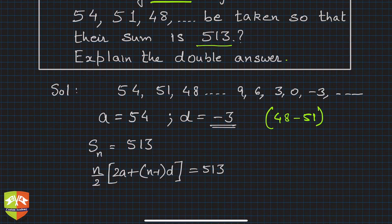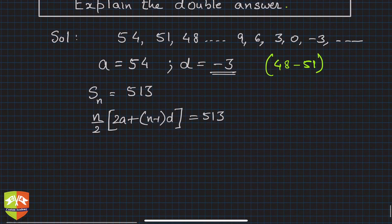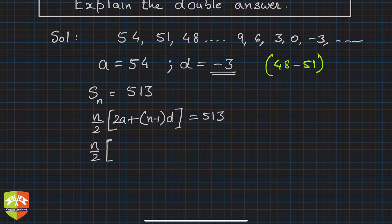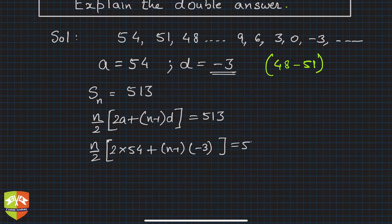Let's deploy the values of a and d to find n. So (n/2)[2(54) + (n-1)(-3)] = 513. I can take this 2 to the other side and multiply, and it becomes n(108 + 3 - 3n).